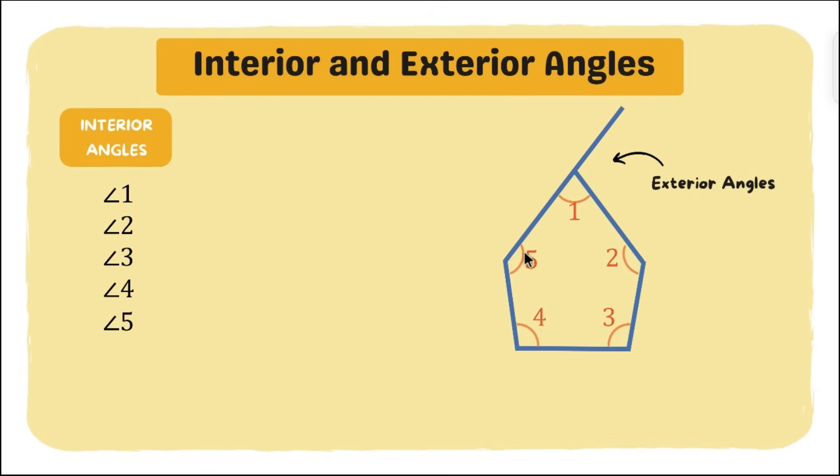An exterior angle is formed when a side of a polygon is extended outward. So let's take a look at the other exterior angles. We have this exterior angle, this one, next. These are all our exterior angles. You might be asking, why is this side extended? Why not the other side? We can actually use those.